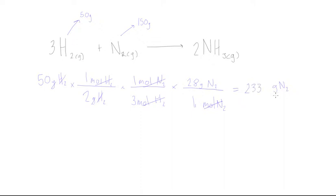Let's stop here and think about what this means. What this is saying is we combine these with the stoichiometric coefficients and the ratios. So this means that 50 grams of hydrogen gas can react fully with 233 grams of nitrogen gas. Let's go back to the original equation. We said we had 50 grams of hydrogen gas reacting with 150 grams of nitrogen gas.